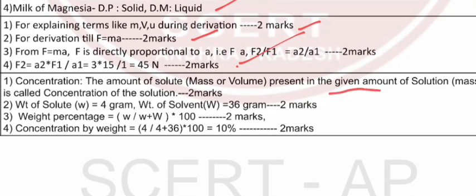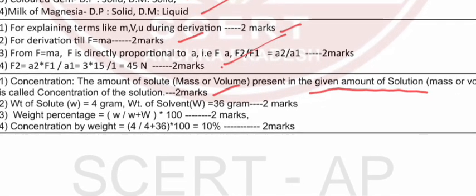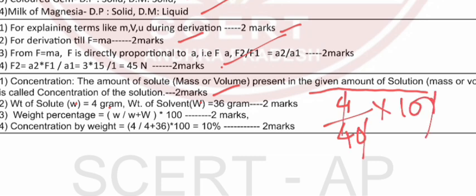Question 20b: Concentration of solution is defined as the amount of solute present in a given amount of solution. Weight of solute = 4 grams, weight of solvent = 36 grams. Mass by mass percentage = (4 ÷ (4 + 36)) × 100 = (4 ÷ 40) × 100 = 10%. So the concentration is 10%.